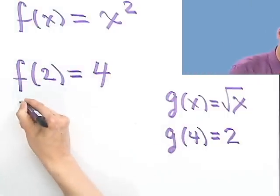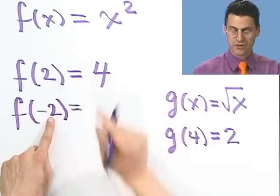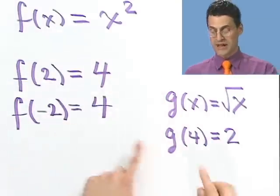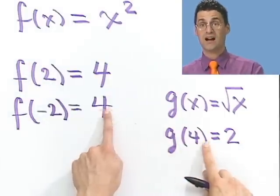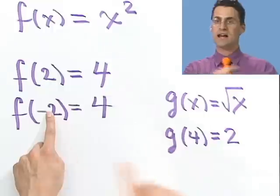But let's try this. f of minus 2. If I put in minus 2 and square it, I still get 4. But look what happens. When I plug back the 4 again, I still get 2. So this is not giving me back the exact value I got before.